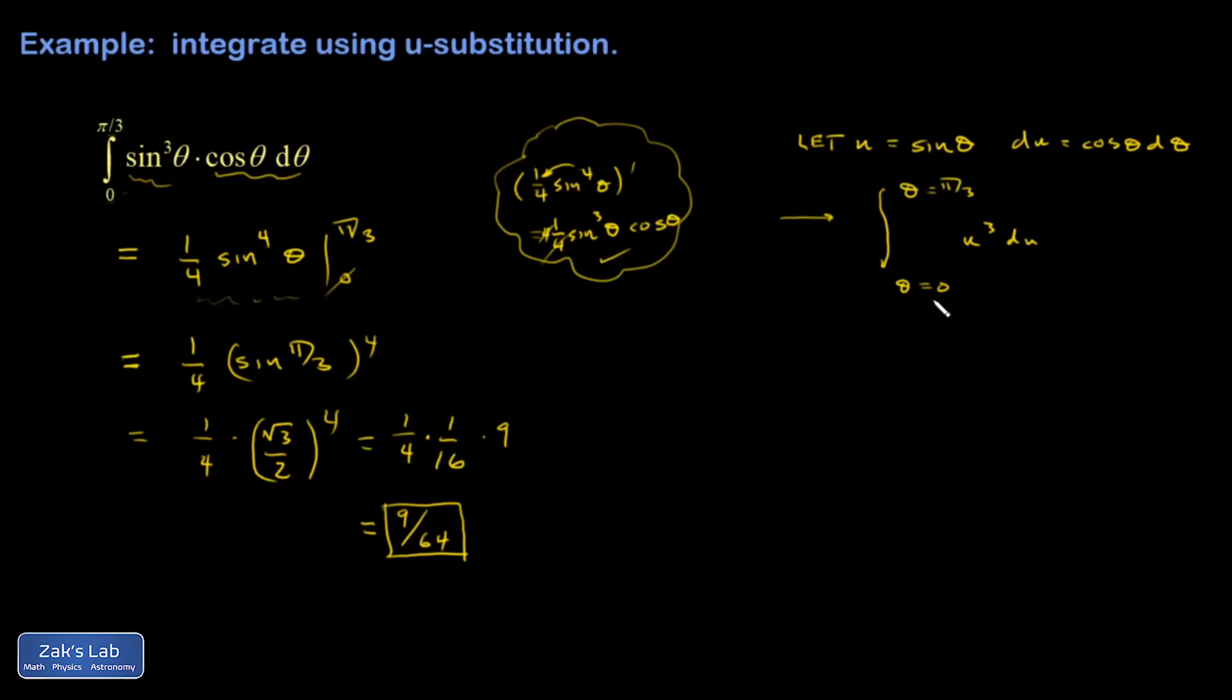Another option is to just forget about theta for the rest of the problem. And to do that, I've got to transform these limits of integration. So when theta equals zero, I've got to figure out what u is. Here's the definition of u. u is going to be the sine of zero, which is zero.